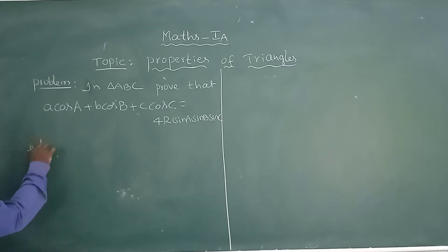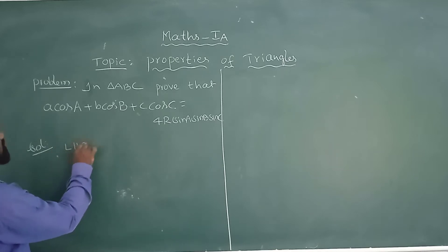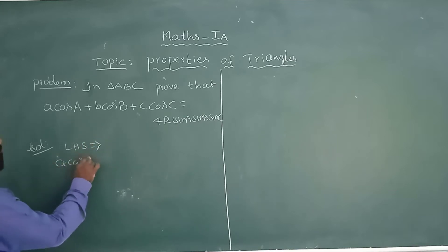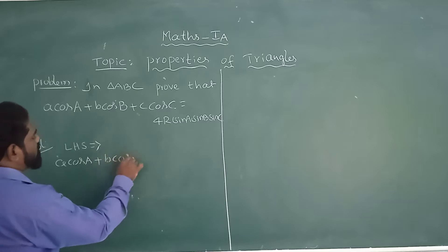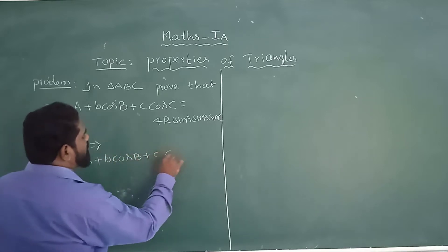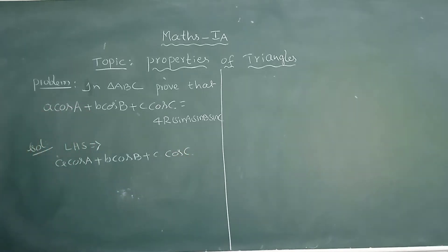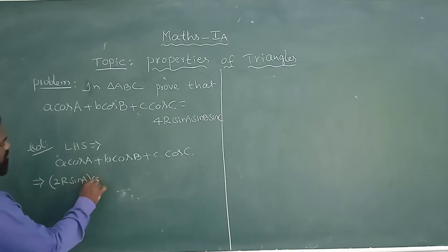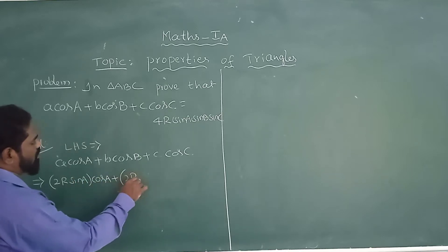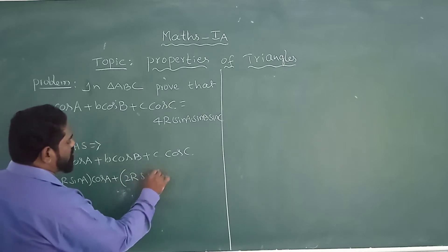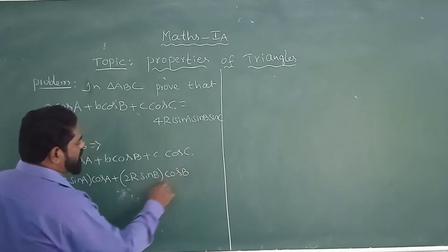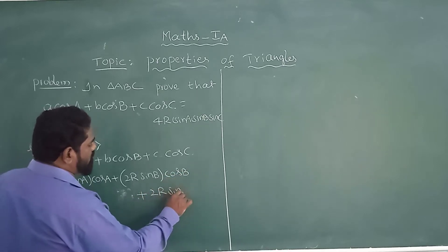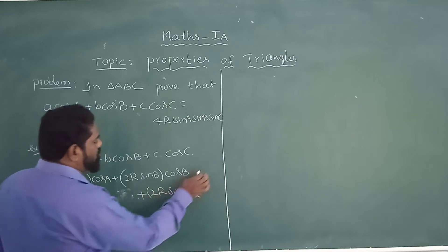Let us see the solution. Take the LHS: a·cosA + b·cosB + c·cosC. According to the sine rule, a = 2R·sinA, so this becomes 2R·sinA·cosA + 2R·sinB·cosB + 2R·sinC·cosC.